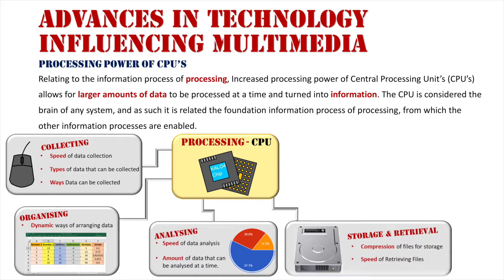After analysis, we'll look at storage and retrieval. In the context of multimedia systems, a big one is compression — the fact that we can compress data when it's not in use and store it on our hard drives at a much smaller file size. That compression process being done at a faster rate, and then in return, the speed of retrieving files when we want to bring them back. We'll talk about that more when we get to displaying.